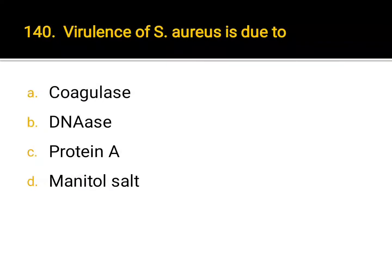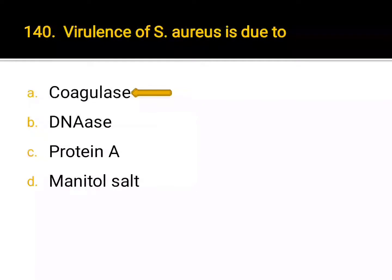Virulence of S. aureus is due to: A. coagulase, B. DNase, C. protein A, D. mannitol salt. Correct answer: A. Coagulase.